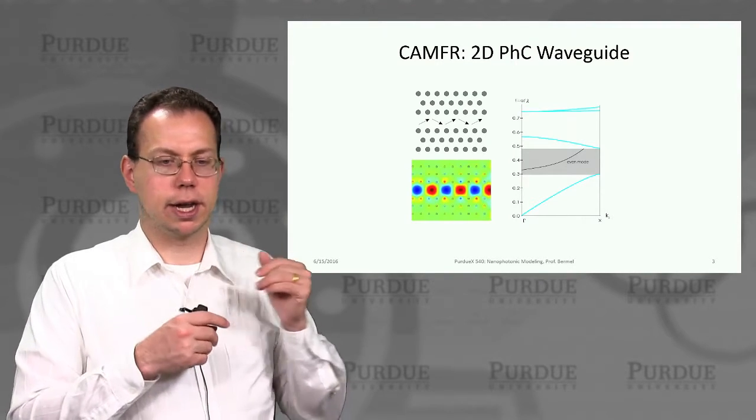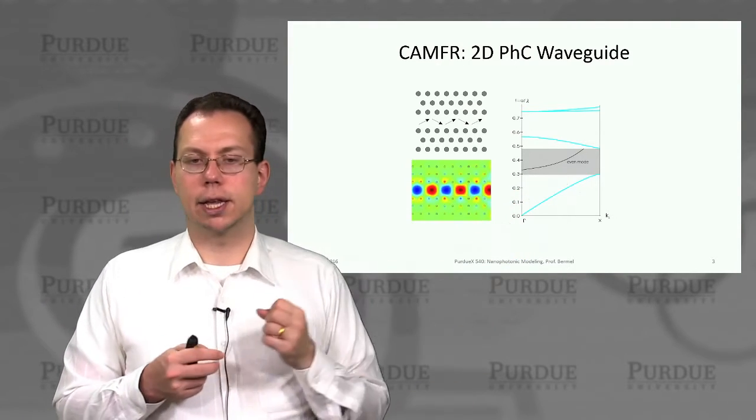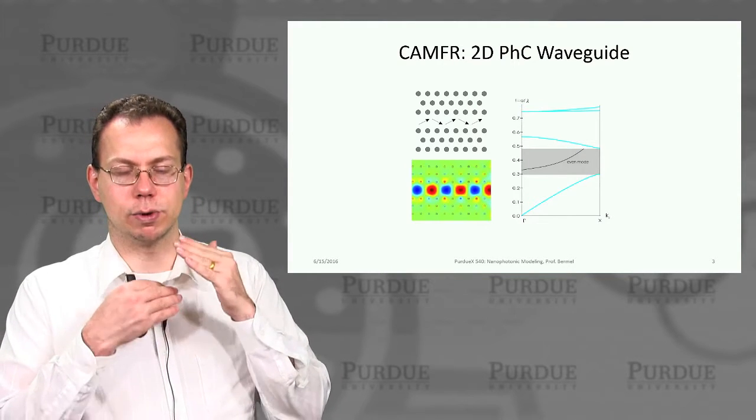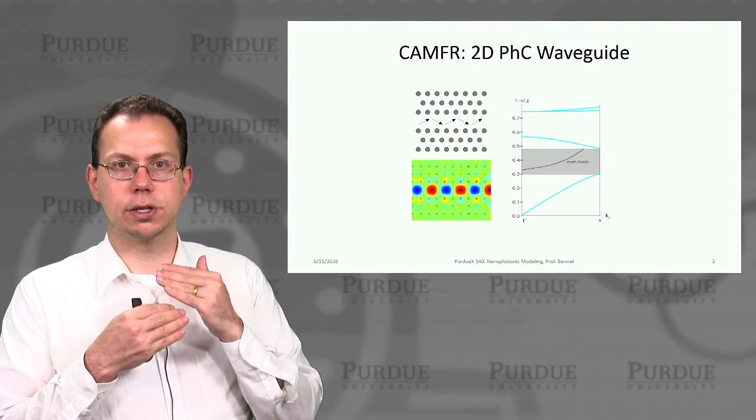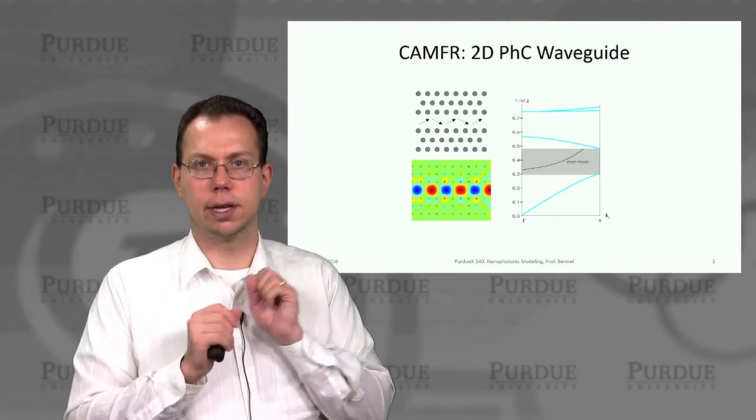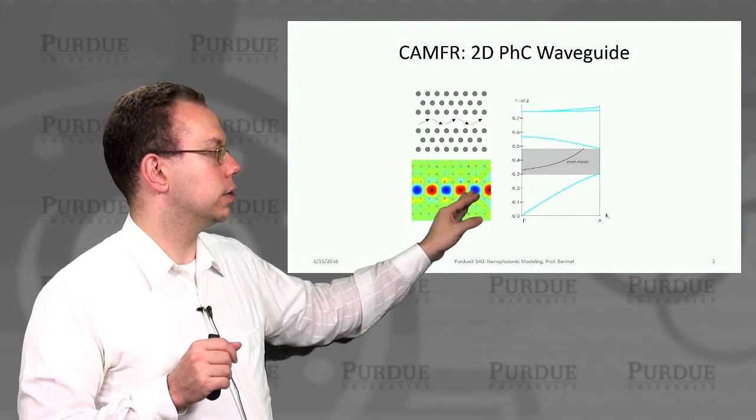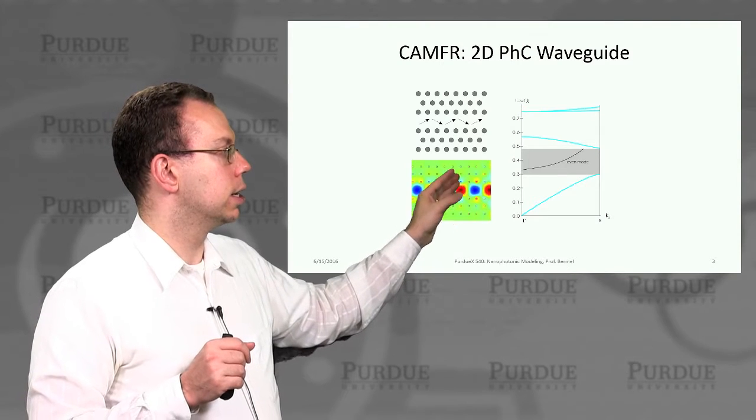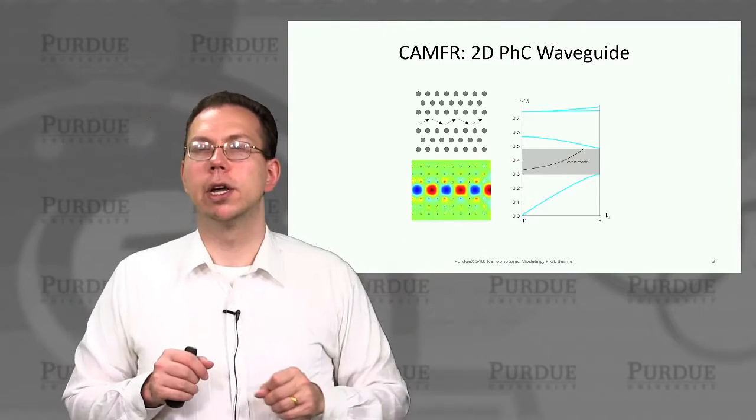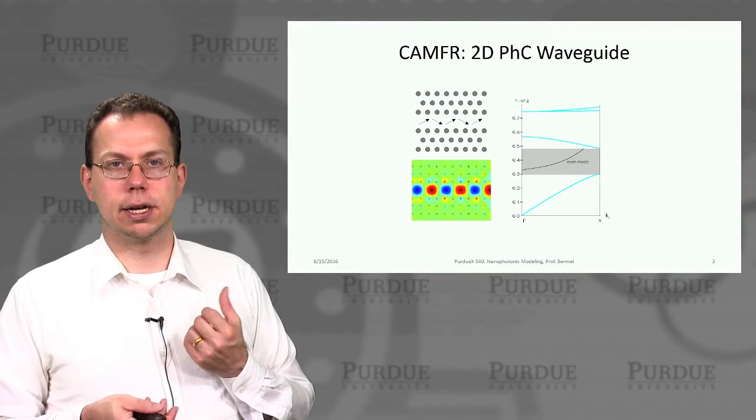But in this particular case, you see this even mode actually spans a large part of the band gap. And then where you are located in the band gap will determine how tight the spatial confinement is within this defect region. Basically, the closer you are to the middle of the band gap, then the more rapid spatial decay you have as you leave that defect region. And you can see here what fields are associated with this solution. And so it's actually decaying pretty rapidly. So you actually only need about three or four periods of the photonic crystal in order to accurately capture that mode.